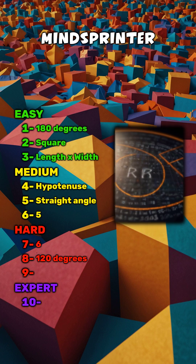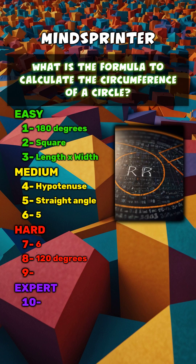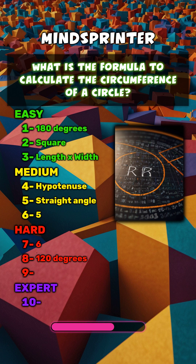What is the formula to calculate the circumference of a circle? 2πr.